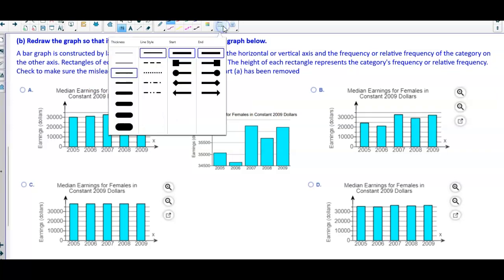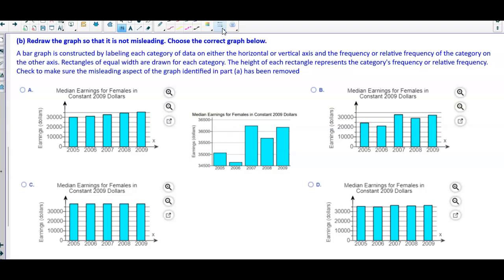So let's take a look at this. Our first in 2005 is just above 35,000 here, and we can see that 2006 is above 34,500. We can see that 2007 is above 36,000. 2008 is above 35,500, and 2009 is above 36,000.